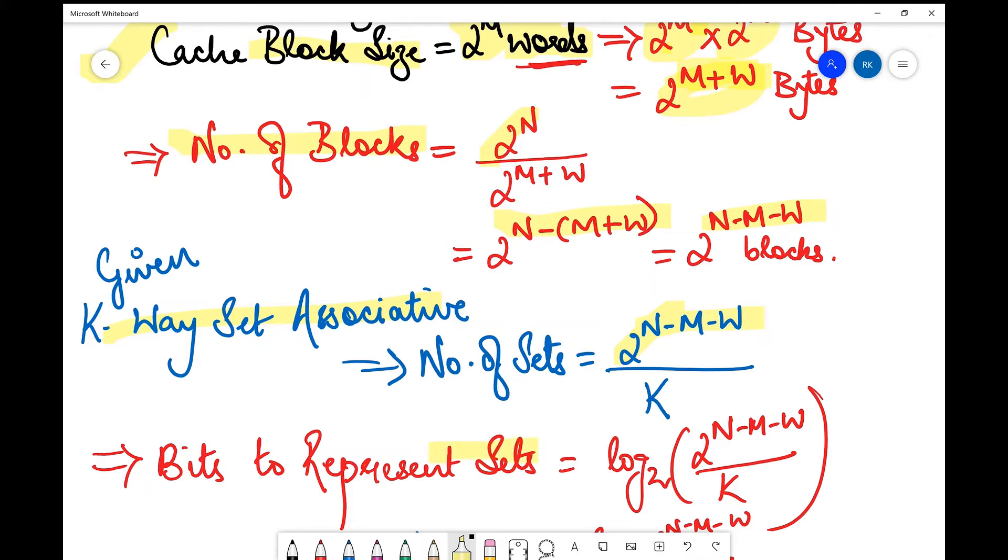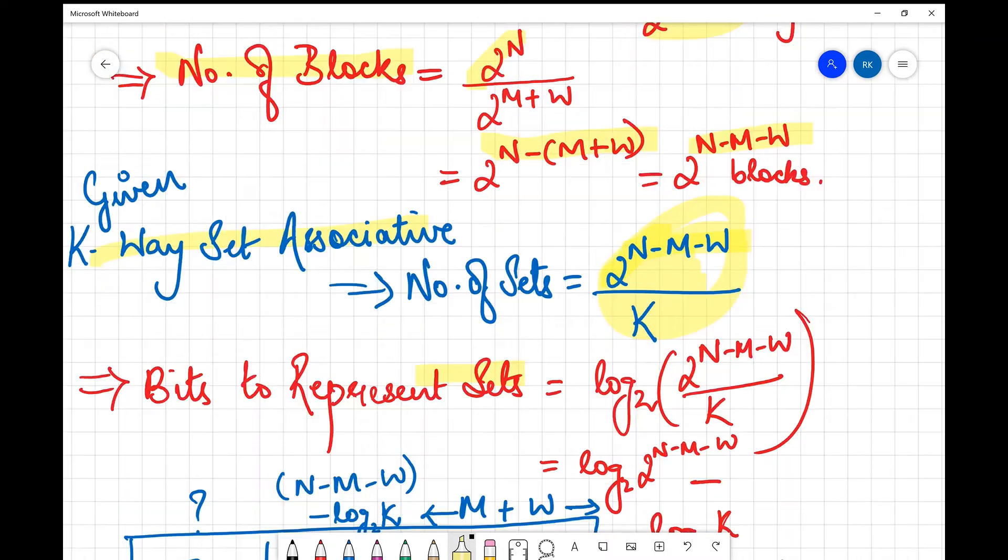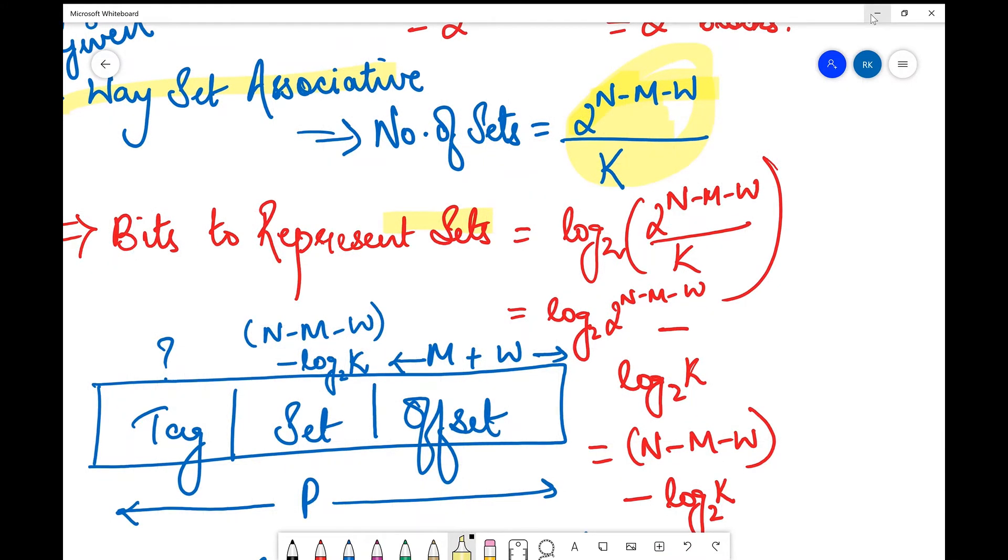So I've written log₂(2^(n-m-w)/k). Now solving this out, you'll be using the log notation rule. You should know that log of a/b equals log a minus log b. I've just used this rule to simplify the expression, so this becomes log₂(2^(n-m-w)) minus log₂(k).